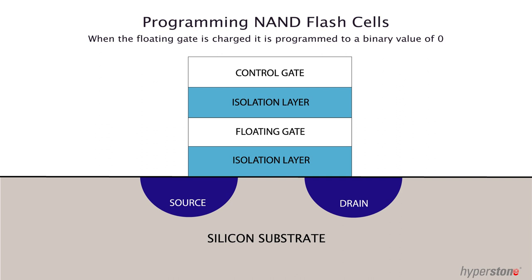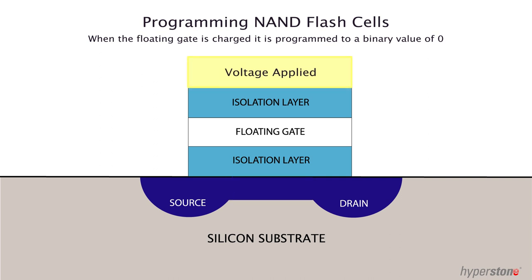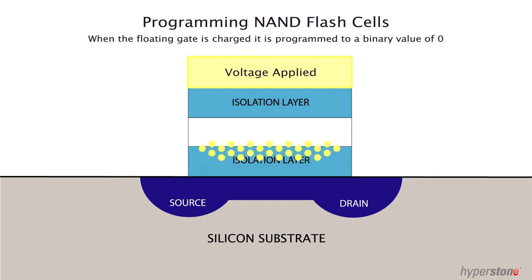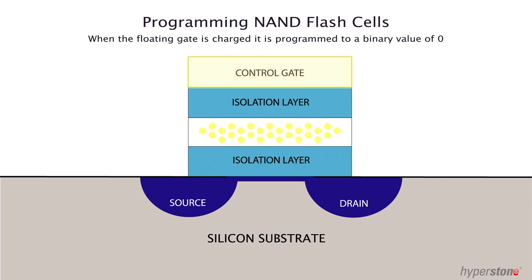To program a NAND flash cell, a voltage needs to be applied to the control gate while the source and drain are grounded. The electrons in the channel then have enough energy to overcome the isolation layer and move into the floating gate. Since the floating gate is electrically isolated, it can store charge even when the power is removed.